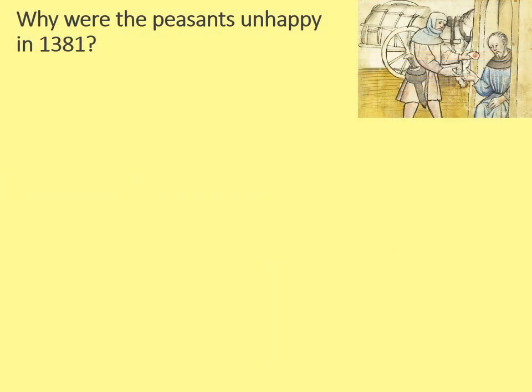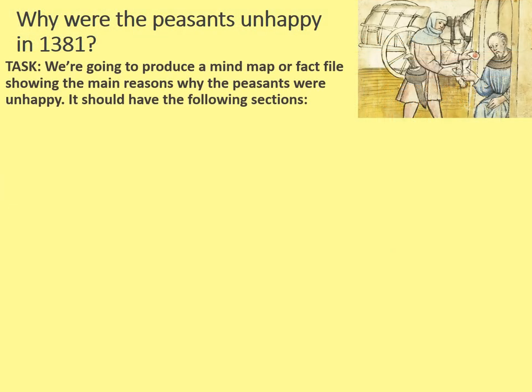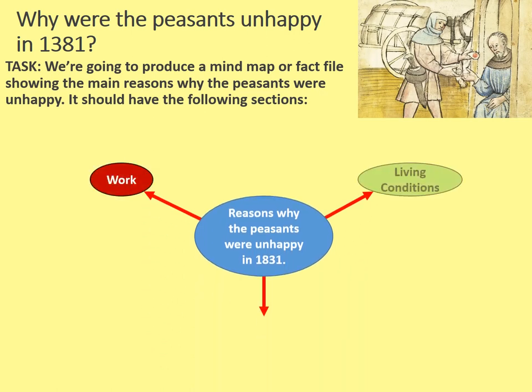Why were the peasants unhappy in 1381? We're going to produce a mind map or fact file showing the main reasons. It should have the following sections — I've used colour coding to make it clearer and I suggest you do the same if you're able to. Section one is going to be on work, section two on living conditions, and the final section on rules and laws. Pause the video here while you complete the template, then press play when you're ready to see the information.